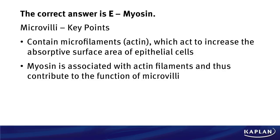Some key points to know about microvilli: number one, they contain microfilaments — that word should make you think actin. Actin and microfilaments have to go together in your head on test day. Microvilli act to increase the absorptive surface area of our cells, which makes sense in the duodenum. Now, if you've got actin, you're going to have Myosin. Myosin is associated with the actin filaments that contribute to the function of microvilli — that's why Myosin is the correct answer.